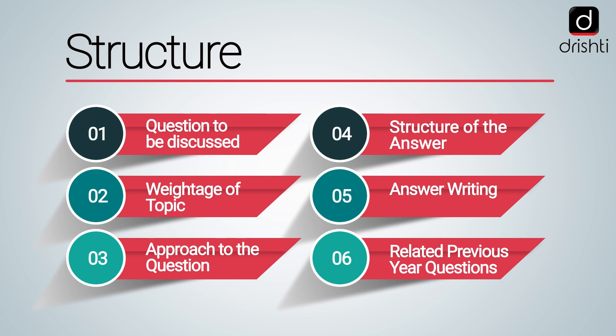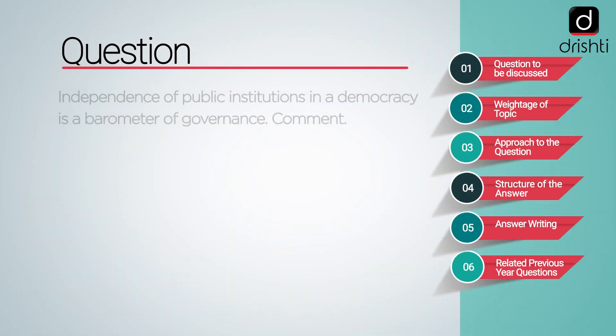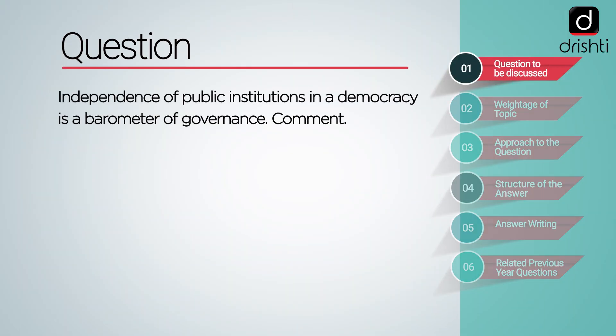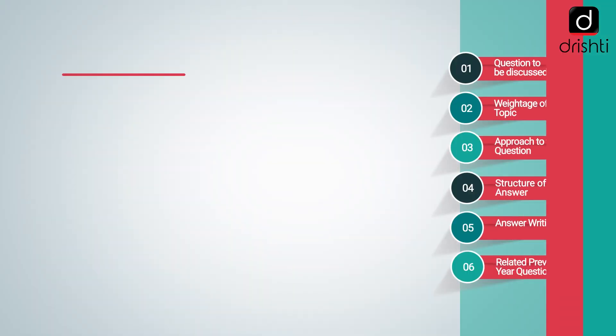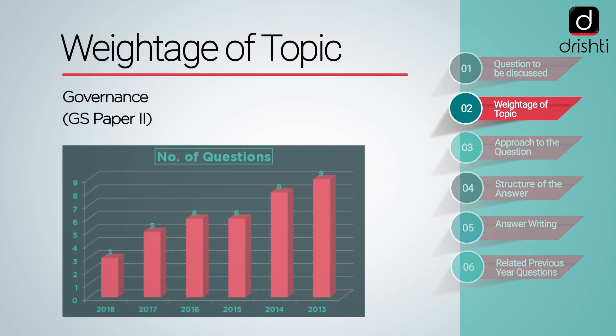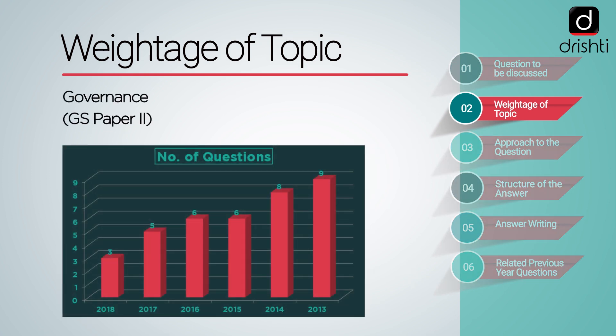Let's look at the question we'll be discussing in this episode. The question is: 'Independence of public institutions in a democracy is a barometer of governance. Comment.' The question is on the topic governance from the segment polity and governance in GS paper 2. Over the years, the weightage of the topic has ranged between three questions in 2018 to as high as nine questions in 2013.